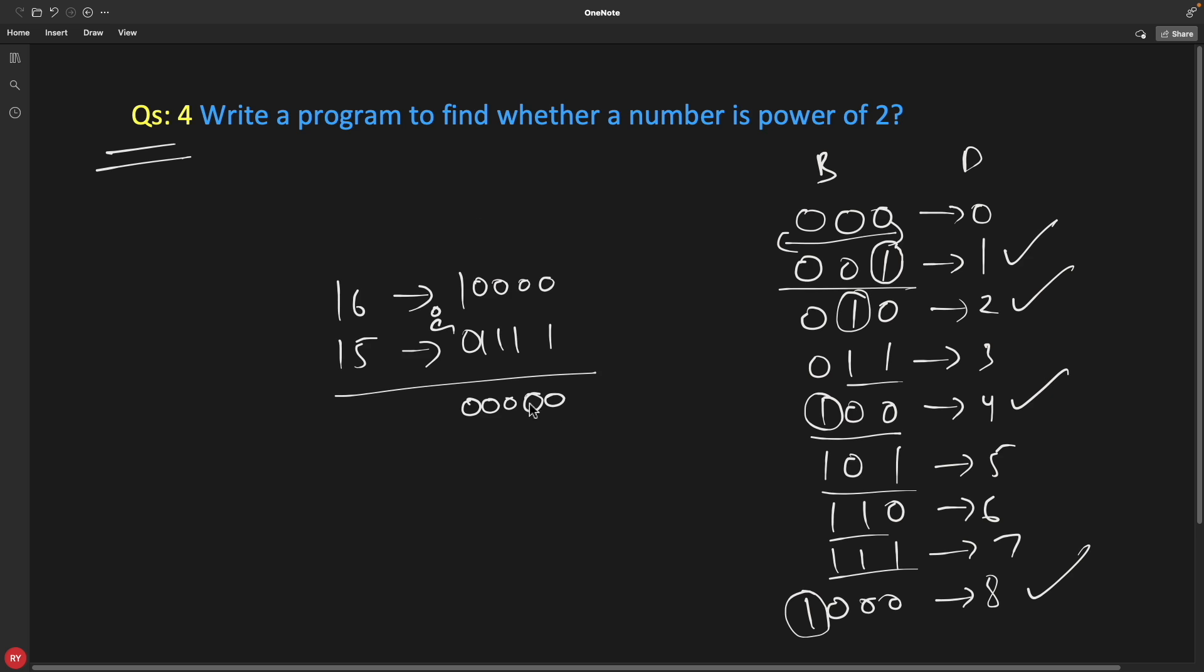But there's a problem with this approach when n equals zero. This formula n & (n-1) will not work when n is zero. In order to handle this case, we can use n in the condition.